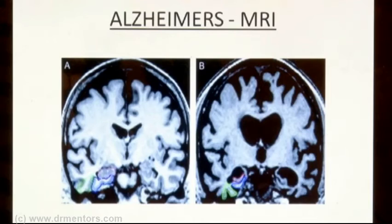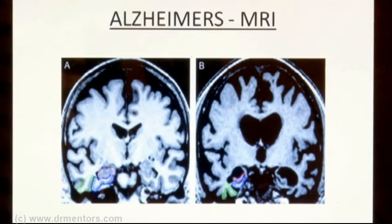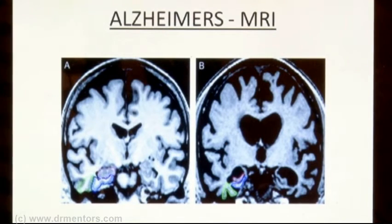Let me demonstrate this on MRI. You can see clearly that there is excavio-dilatation of the ventricles — where the ventricles appear dilated — and correspondingly you also find that there is prominence of sulci and gyri.